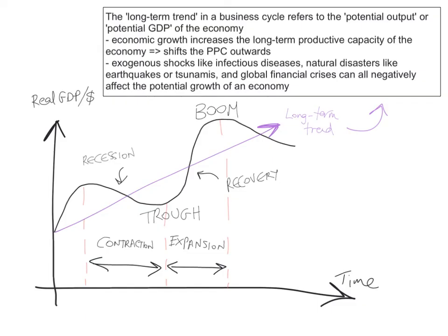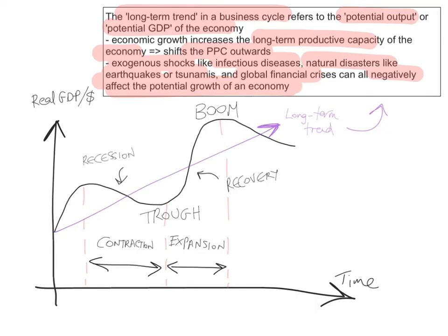Recessions, troughs, recoveries, and booms are short-term fluctuations that all fluctuate around the long-term trend in the business cycle, which refers to the potential output or potential GDP of the economy. Economic growth increases the long-term productive capacity of the economy, shifting its production possibilities curve outward. However, economies are also affected by exogenous shocks — such as infectious diseases, natural disasters, earthquakes, tsunamis, and global financial crises — which can negatively affect potential growth. Assuming no exogenous shocks, the long-term trend should show an increase in real GDP over time, even with short-term fluctuations.